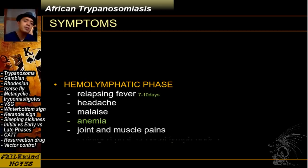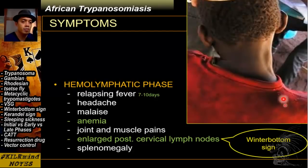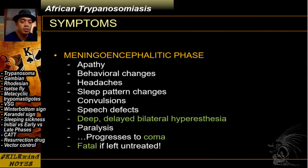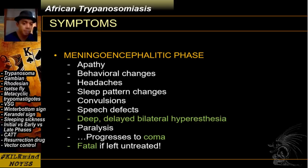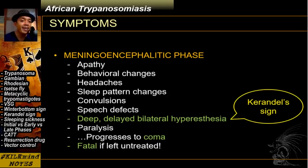During the hemolymphatic phase, the symptoms include relapsing fever, headache, malaise, anemia, joint and muscle pains. There is also an enlarged posterior cervical lymph node formation, which is called Winterbottom's sign. For the meningoencephalitic phase, you would expect behavioral changes and central nervous system symptoms such as headaches, sleep pattern changes, confusion, and speech defects. There is also a deep delayed bilateral hyperesthesia, which is called the Kerandel sign.